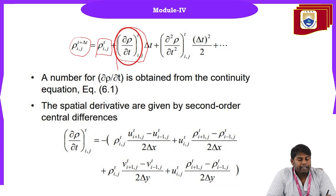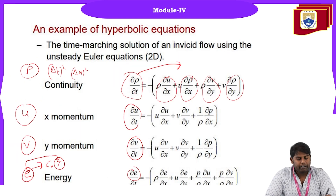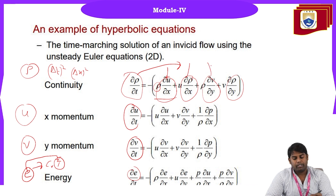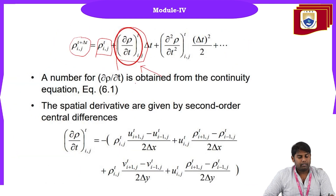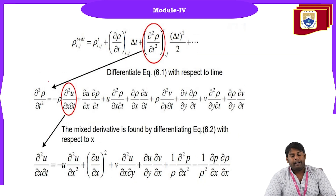We substitute the continuity equation formula for ∂ρ/∂t, where the continuity equation gives: −ρ·(∂u/∂x) − u·(∂ρ/∂x) − ρ·(∂v/∂y) − v·(∂ρ/∂y). We apply the central difference formulation for each of these terms: ∂u/∂x, ∂ρ/∂x, ∂v/∂y, and ∂ρ/∂y. When we substitute this central difference expression, we get the value of ρ(i,j)^(t+Δt). This part is very straightforward.